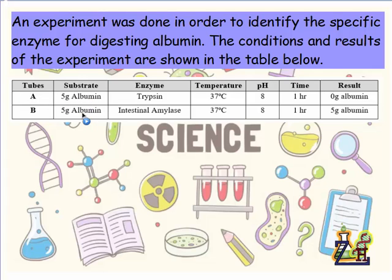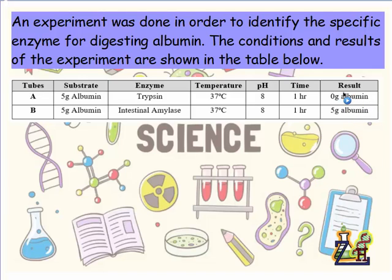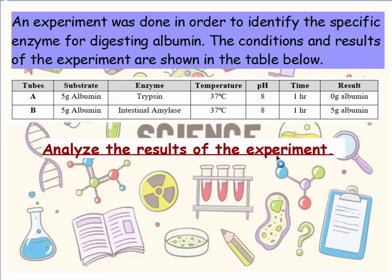We have two tubes. Both tubes contain 5 grams of albumin. In tube A we have the enzyme trypsin; in tube B we have the enzyme intestinal amylase. The manipulated factor is the type of enzyme, since we want to identify the specific enzyme for albumin. Temperature is 37°C in both, pH is 8 in both, and time given is one hour — these are constant factors. The measured factor is the mass of albumin. The result: tube A has 0 grams of albumin remaining, while tube B still has 5 grams.